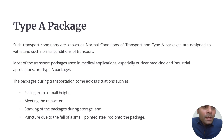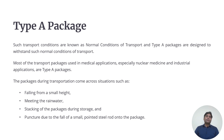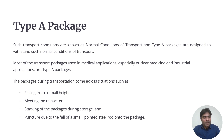Now coming to Type A packages — these are also known as normal conditions of transport packages. Type A packages are designed to withstand normal conditions of transport, meaning if the package falls from some height or a sharp object interacts with it, it should be able to withstand those conditions. Type A packages are used for nuclear medicine products or industrial applications and must handle situations such as falling from a small height, exposure to rainwater, stacking during storage, and puncture due to the fall of a small pointed steel rod.